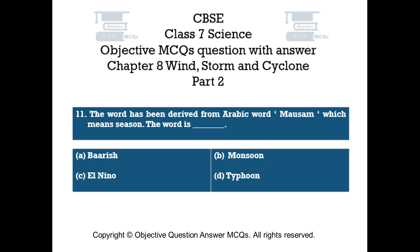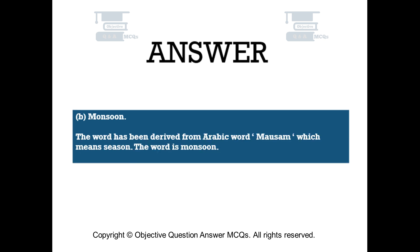Question number 11. The word that has been derived from the Arabic word 'mawsum', which means season, is — Option A: barish. Option B: monsoon. Option C: El Niño. Option D: typhoon. The right answer is Option B: monsoon. The word derived from Arabic 'mawsum' meaning season is monsoon.